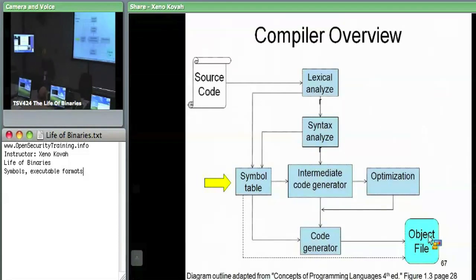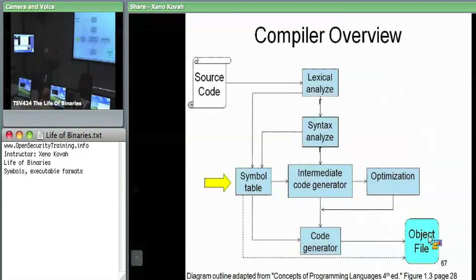So the compiler says to the linker: give me these symbols later and, by the way, I generated some assembly code but it's not done, because if stuff gets moved around in the splicing phase of the linker, then something that may have been at offset 20 in my object file may be at offset 220 in the final file. So you have to fill in those real addresses.